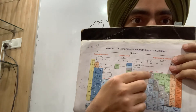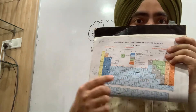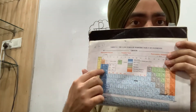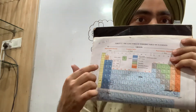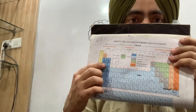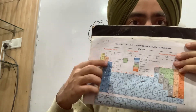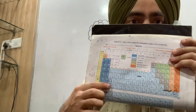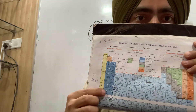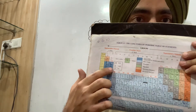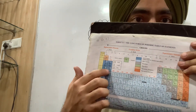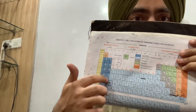For the third period, we can write the elements and their properties. For example, sodium is in group 1 — we can write that property. Magnesium is in group 2 — we can write that property for the third period.